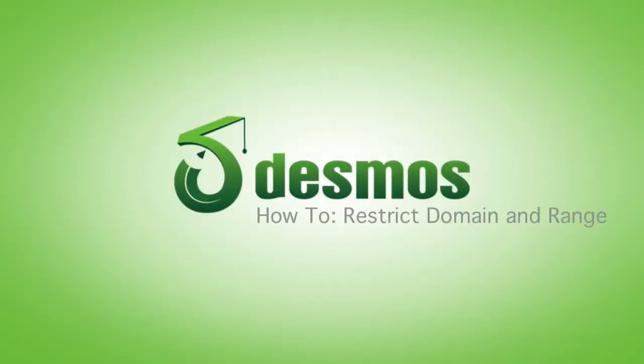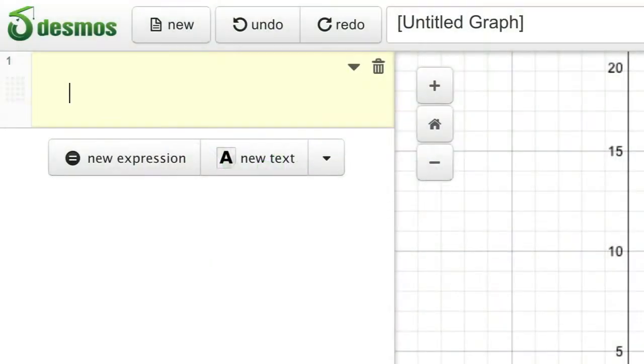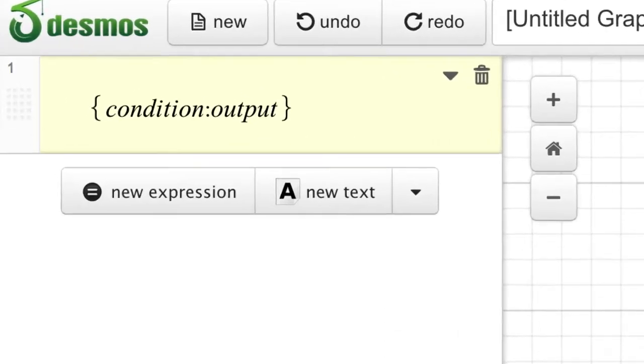Desmos makes it easy to restrict domain and range. The general format for restricting expressions is open curly bracket, condition colon output. We'll add the closing curly bracket for you.